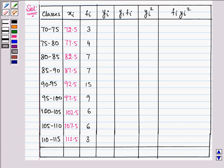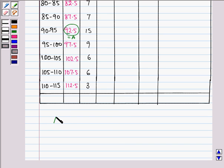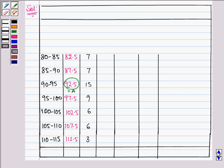Now here, we have assumed the mean as 92.5 and the difference of each Xi is 5, so we will take H as 5. So what we have over here is, we have assumed mean, that is A equals 92.5, and we have H, that is the difference between the consecutive Xi's, that equals 5.